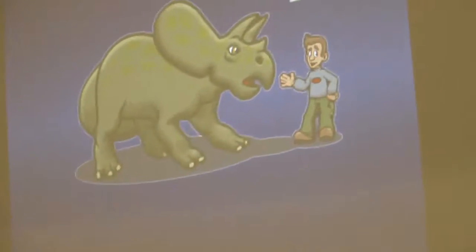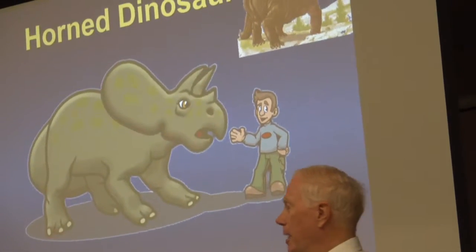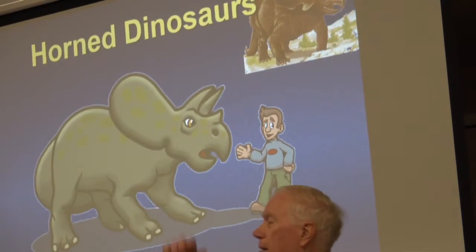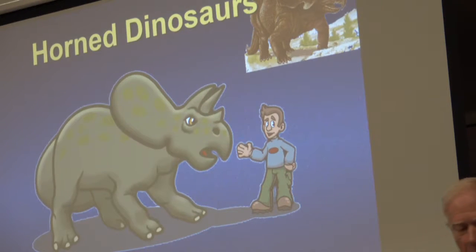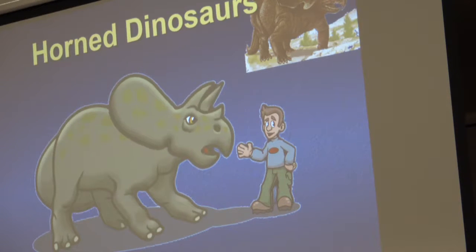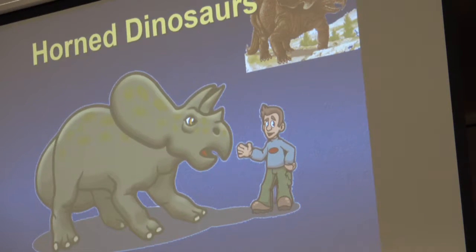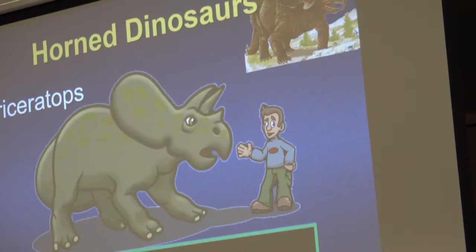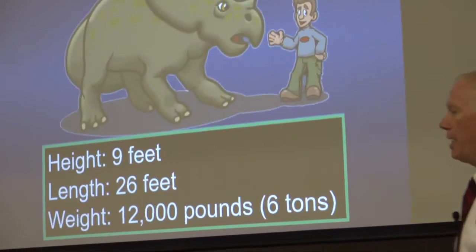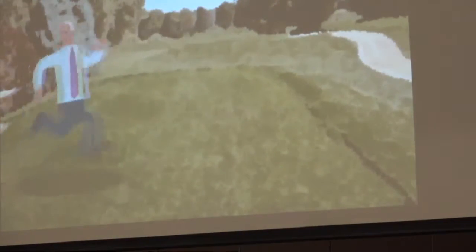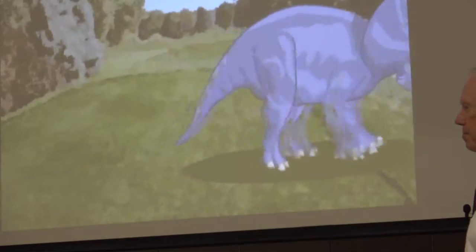How about this one? Triceratops. Why do they call it triceratops? Three horns. This creature got quite big — about 9 feet in height, about 12,000 pounds. How would you like to have this creature chasing you? Some of their horns got up to be 3 feet long.